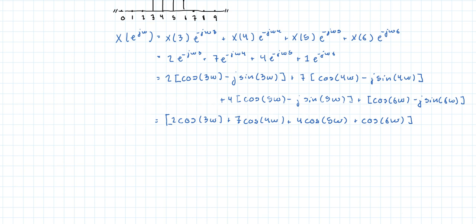And then we are going to have minus j times exactly the same thing, except that we're going to replace the cosines by sines.